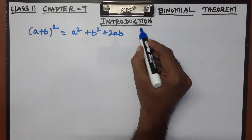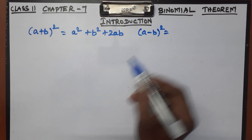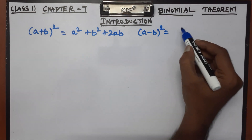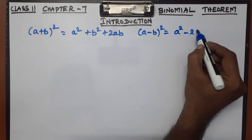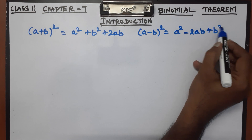This is (a minus b) whole square. So, (a - b)² equals a squared minus 2ab plus b squared.